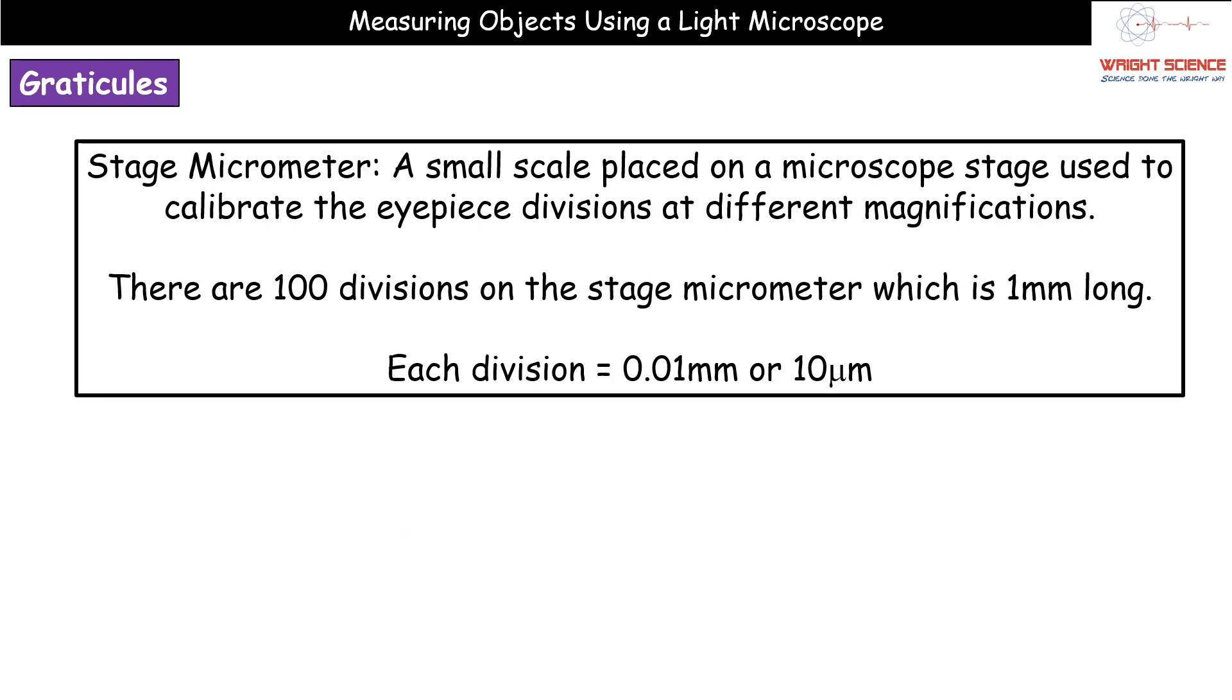Now the stage micrometer quite simply is a small scale that's placed on the stage of the microscope that we use to calibrate those eyepiece divisions. The reason we've got to do that is because each of the different objective lenses will have a different value for it. So we need to use this stage micrometer with each of those different objective lenses first to calibrate, to know how much those values correspond to for each of our objective lenses.